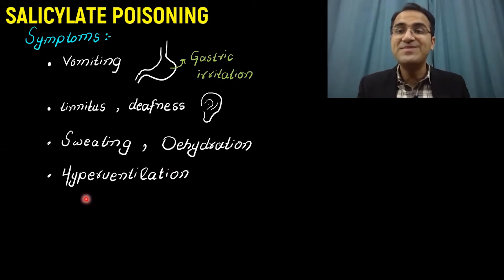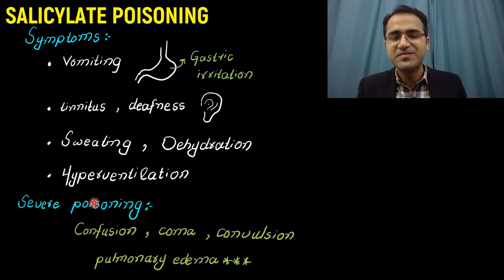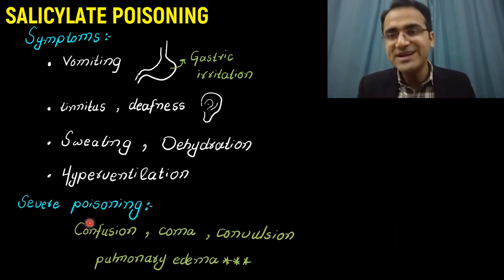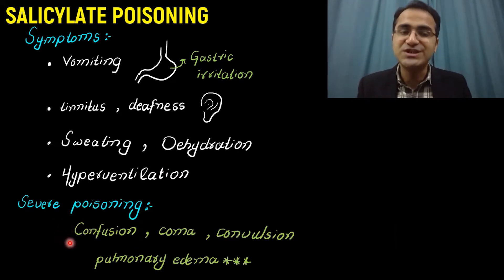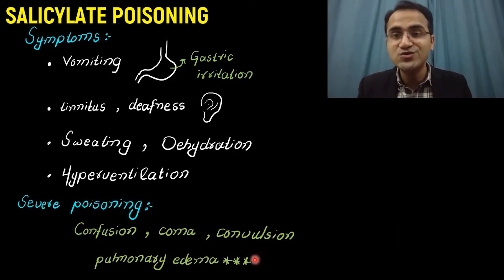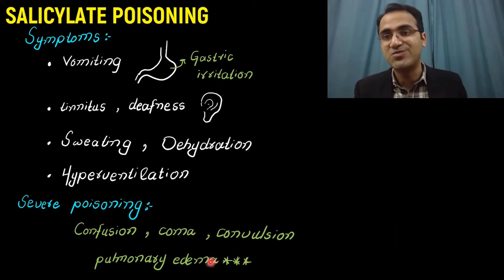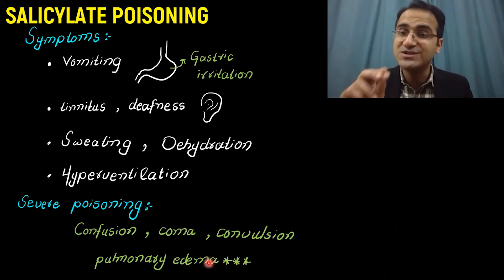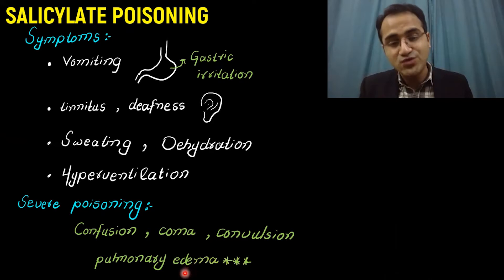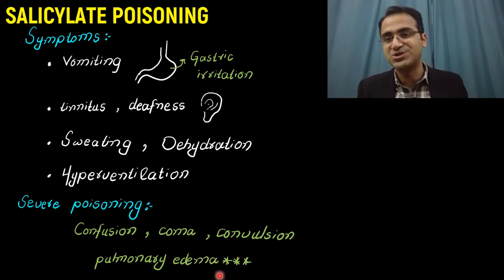The patient would be sweating and dehydrated. There will be hyperventilation and increased respiratory drive. In severe cases of salicylate poisoning, you would see confusion, coma, and convulsions due to metabolic disturbances. In rare cases, pulmonary edema may also be seen.